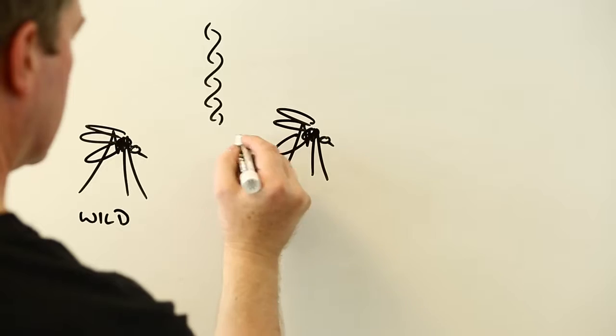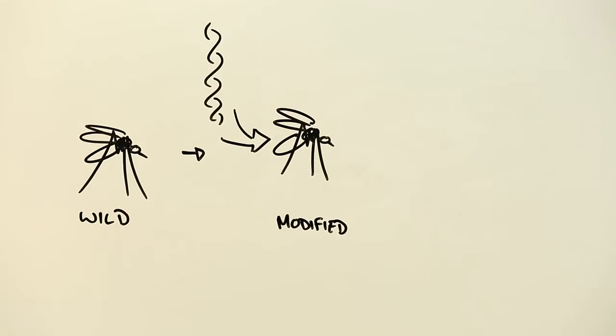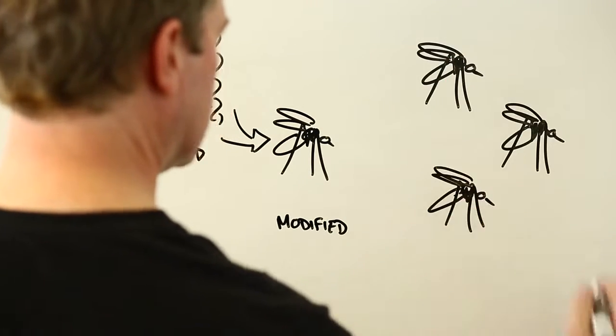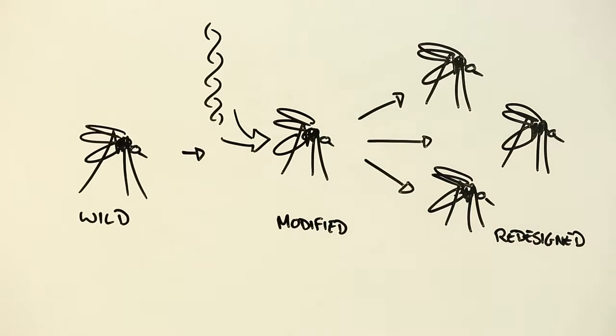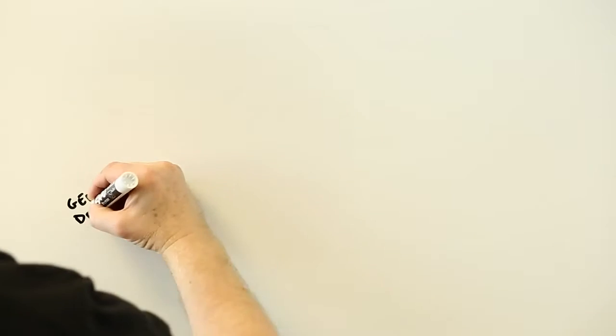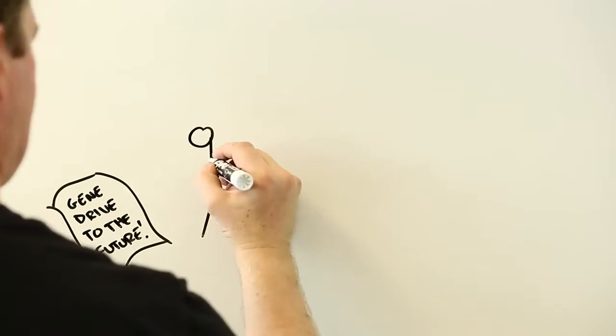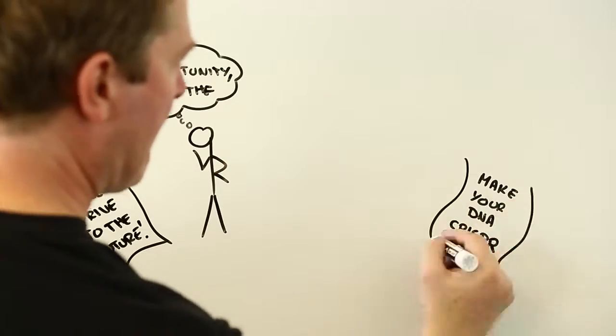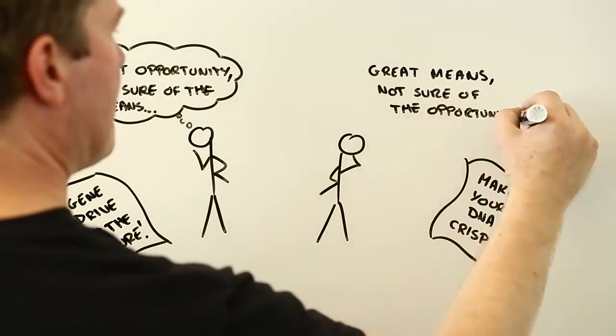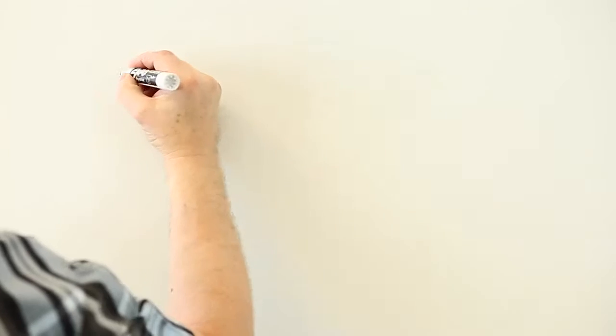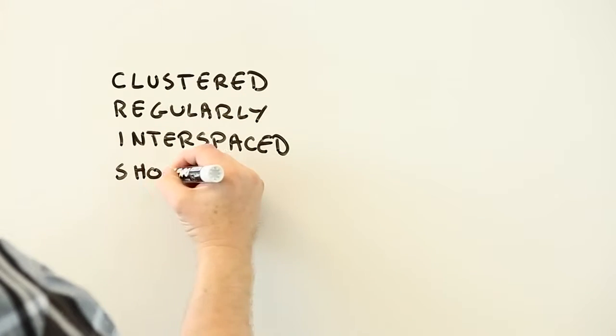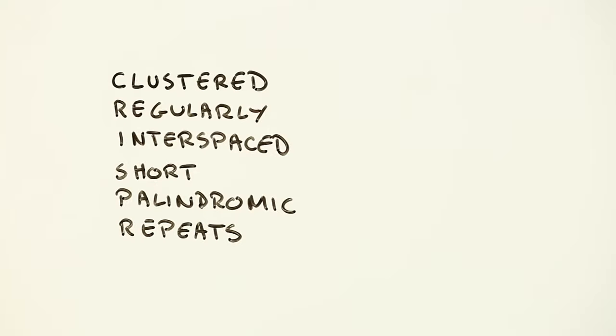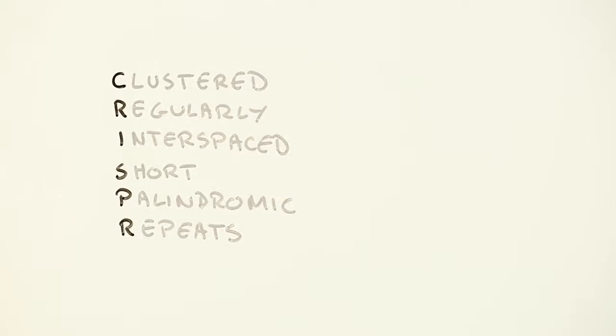Gene drives are designed to eliminate unwanted traits in insects and other animals. They work by pushing out genetic modifications through whole species until eventually every critter has been changed into something we have intentionally engineered. The idea isn't especially new, but it's only very recently that advanced gene editing techniques have made human-designed gene drives possible. At the heart of this revolution is a new technique for precision engineering genes: clustered regularly interspaced short palindromic repeats, or if you're not into brain-bending tongue twisters, CRISPR for short.